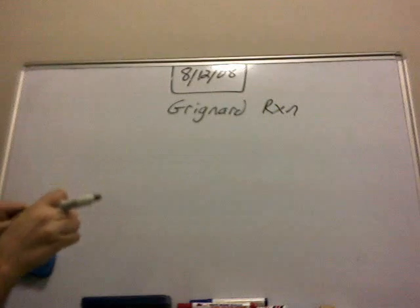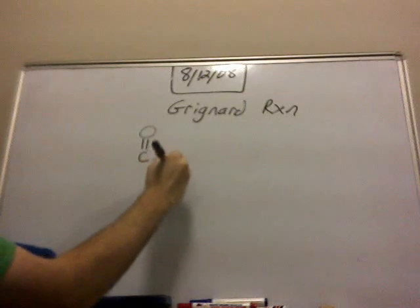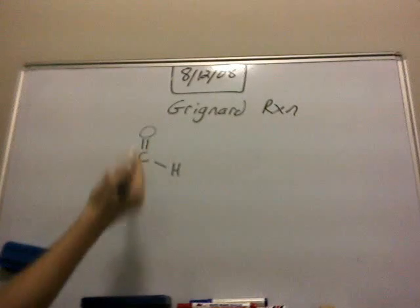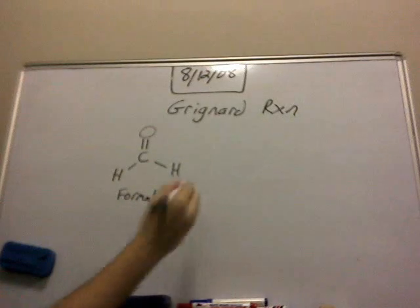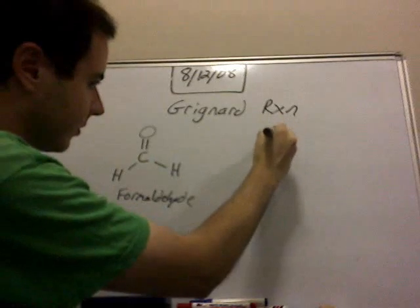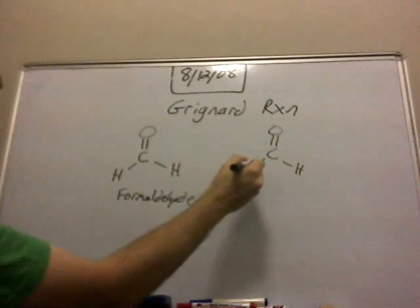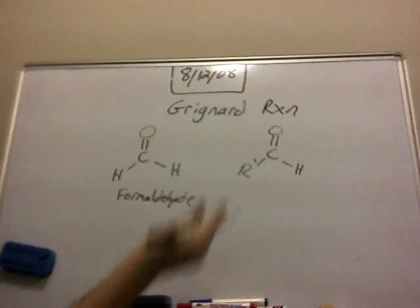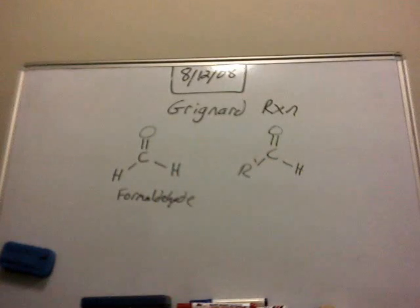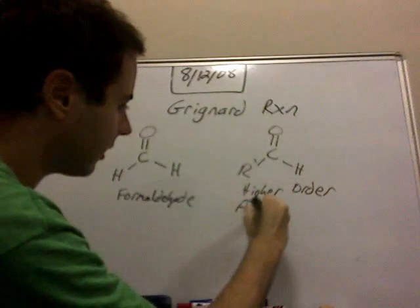First, let's distinguish the difference between formaldehyde, higher level aldehydes, and ketones. Formaldehyde has the basic structure of a carbonyl group with two hydrogens. Higher level aldehydes have almost the same structure — a hydrogen here — but also a carbon species. This variable, R prime, could be a methyl group, an ethyl group, propyl, any carbon group — it could even be a phenyl ring. So this is a higher order aldehyde.